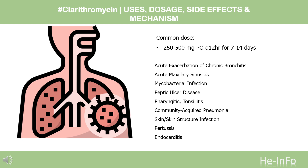For peptic ulcer disease, indicated for H. pylori eradication when treating patients with active or history of peptic ulcer disease: 500 mg PO every 8–12 hours for 10–14 days. Administer as part of a 2- or 3-drug combination regimen with bismuth subsalicylate, amoxicillin, H-2 receptor antagonist, or proton pump inhibitor.